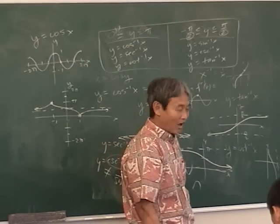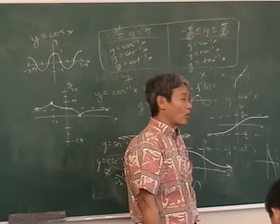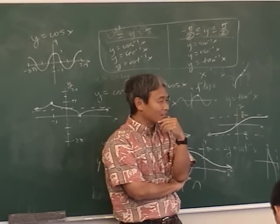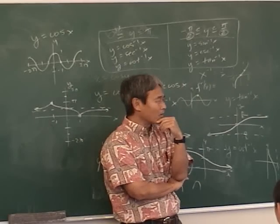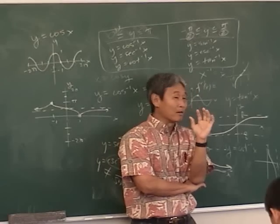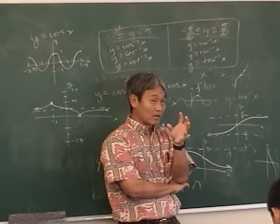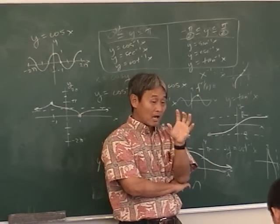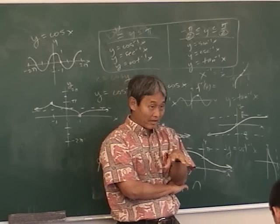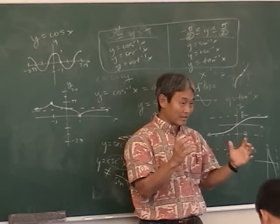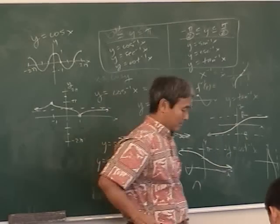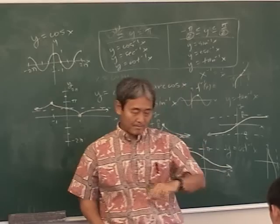It says right there: arc secant x equals arc sine of one over x. Tonight just concentrate on the graphs. Tomorrow we're going to learn the meat of the thing — tomorrow is the meat.